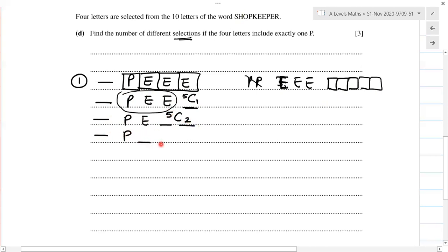P with no E's. Now I have three options that I can select out of five. So I've taken all these, I've taken two E's, I've taken one E, and then I've taken no E. So when there are three E's and one P, so I'm not selecting anything from the remaining five, because I already have four. Only have to select four letters from the ten, the word shopkeeper.